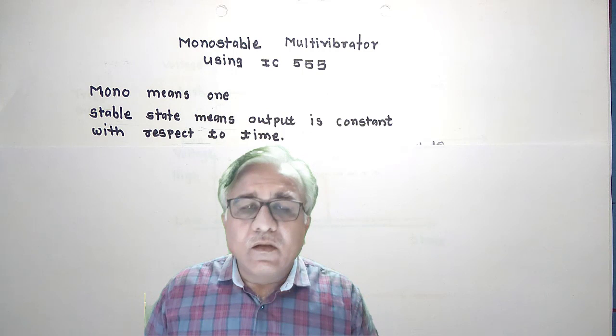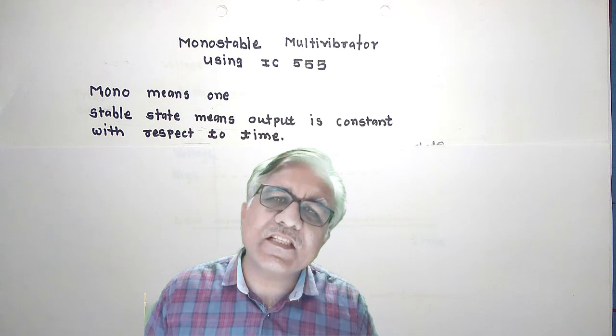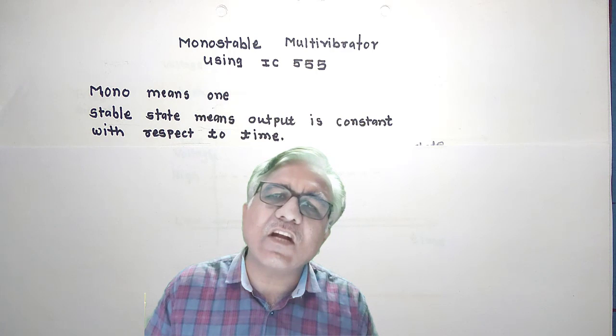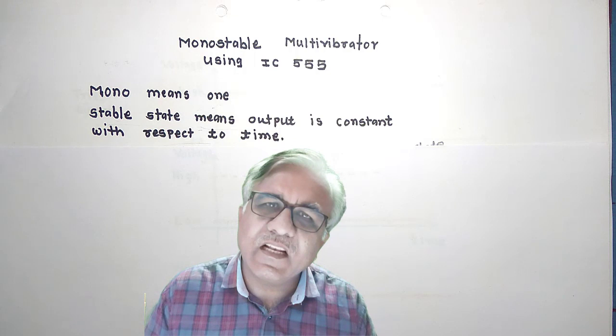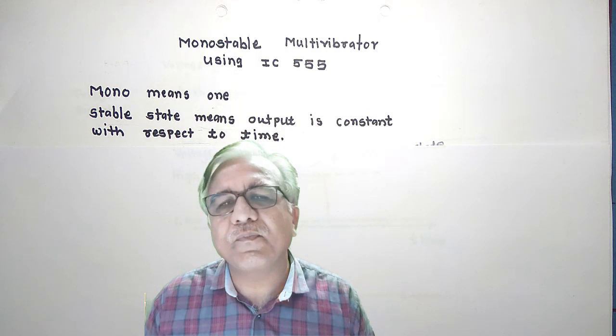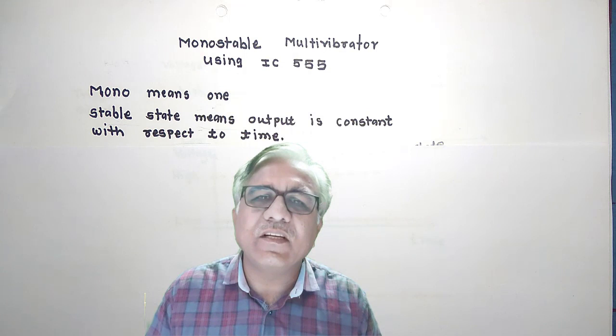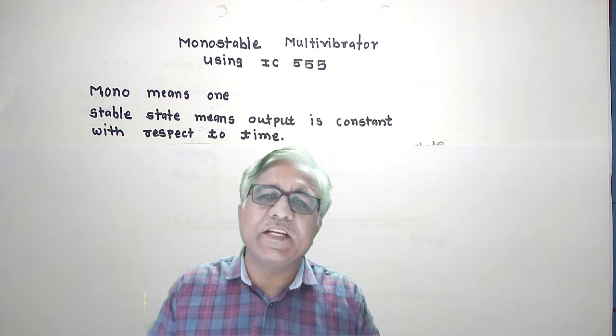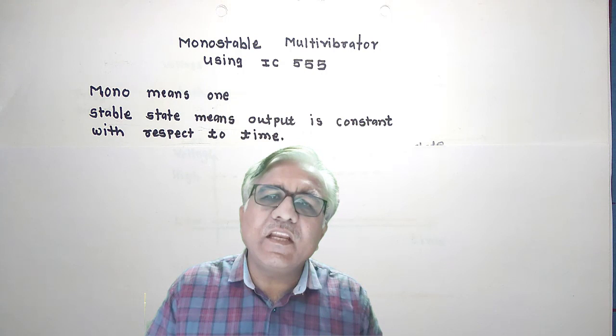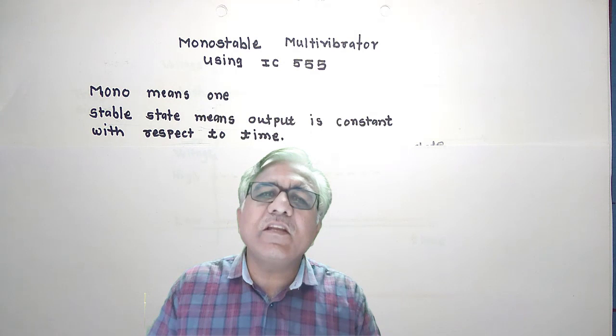Now, where are monostable multivibrators useful? Monostable circuits are used when we have to make a certain machine start to work after the arrival of a certain signal for a particular time. For example, we may need to turn a light on for 15 minutes after receiving a signal, or turn an irrigation electric pump on for one hour after receiving a signal. In such cases, monostable multivibrators are useful.